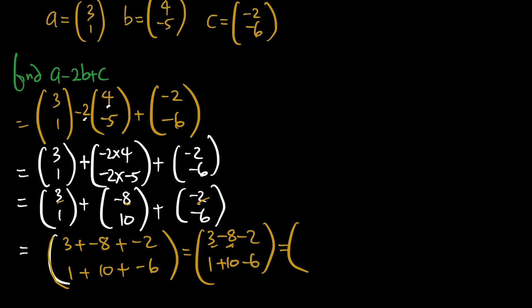Adding x-components: 3 + (negative 8) + (negative 2) = 3 − 8 − 2 = negative 7. Adding y-components: 1 + 10 + (negative 6) = 11 − 6 = 5. So the final answer is (negative 7, 5).